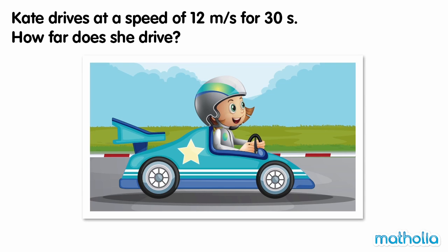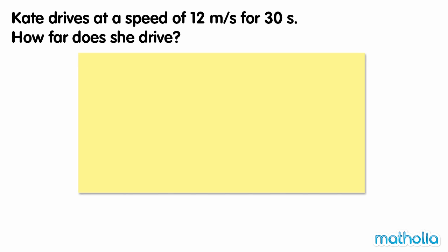Kate drives at a speed of 12 m per second for 30 seconds. How far does she drive? To find the distance, we multiply the speed by the time.